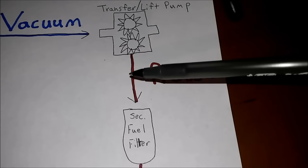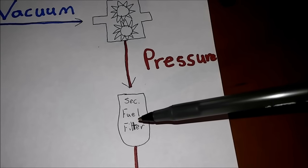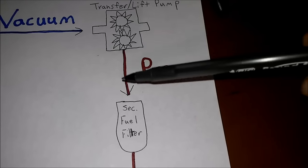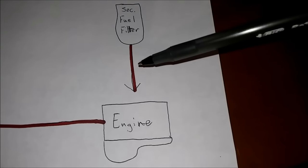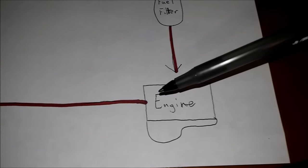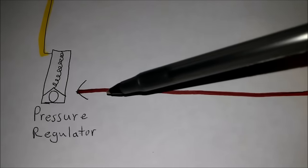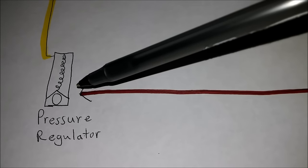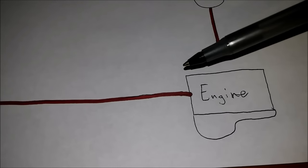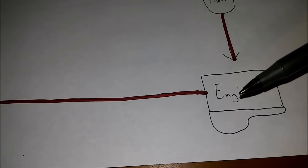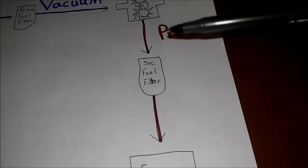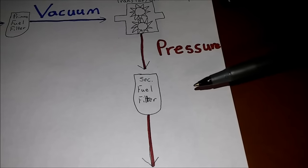Here we have your transfer pump, also called a lift pump. It's going to push fuel under pressure to the secondary fuel filter. Everything after the fuel transfer pump is under pressure — there's no vacuum after the fuel transfer pump. After the secondary fuel filter, it's going to push it to the engine, which runs through the rail on the head. After it goes through the engine, it's going to go through the pressure regulator. That can be mounted to the head, as I showed you on the C7, or it can be mounted inside the fuel filter housing depending on which engine you have. Smaller engines it's on the head; on larger engines like a C13 or C15, it's going to be on the fuel filter housing.